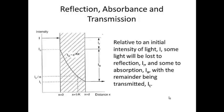Hello and welcome to part two of topic seven on the optical properties of polymers. In this part, we're going to look at general transmission of light through a material and how we have the various aspects of reflection, absorption, and transmission as light passes through a material.